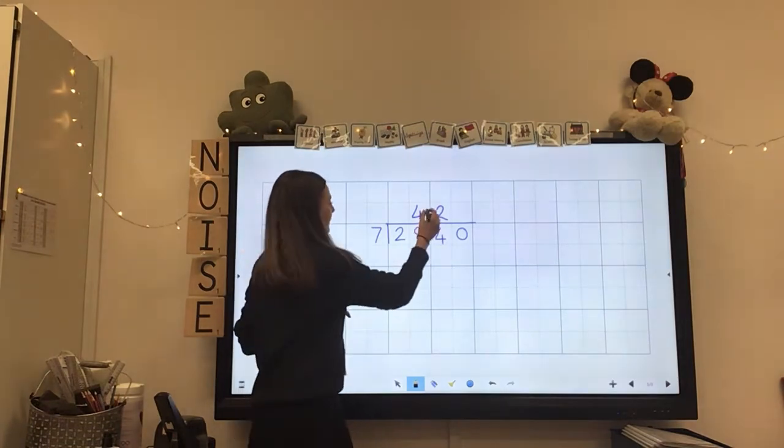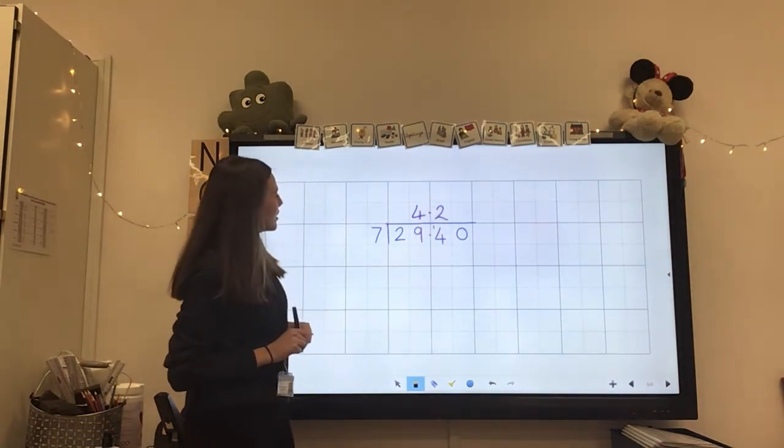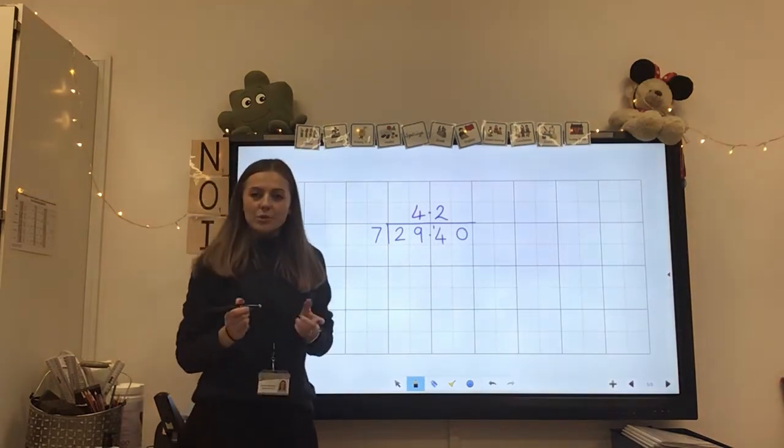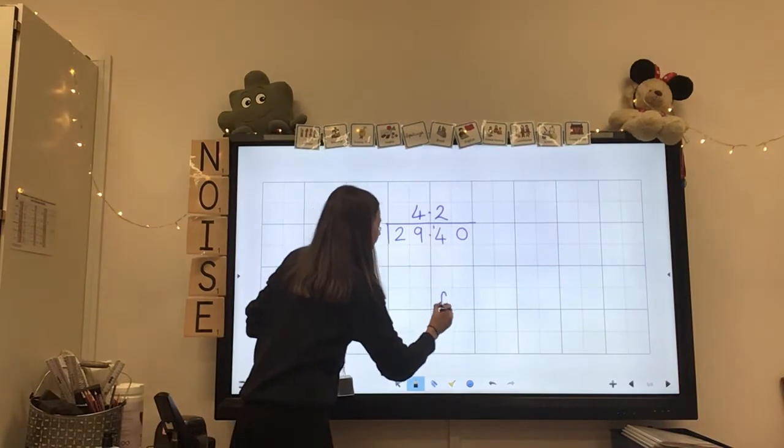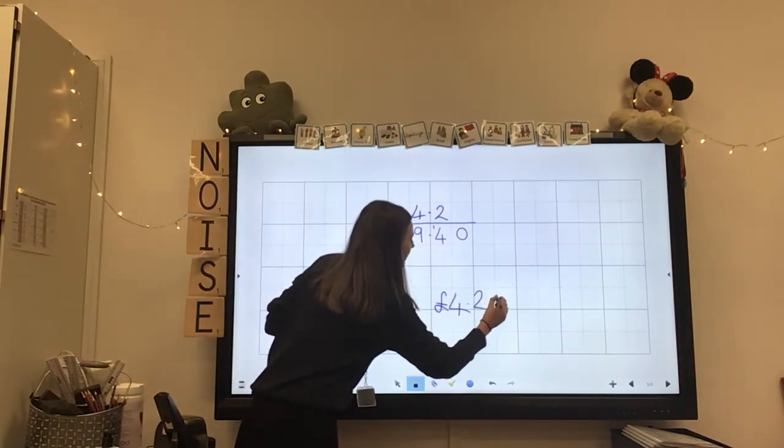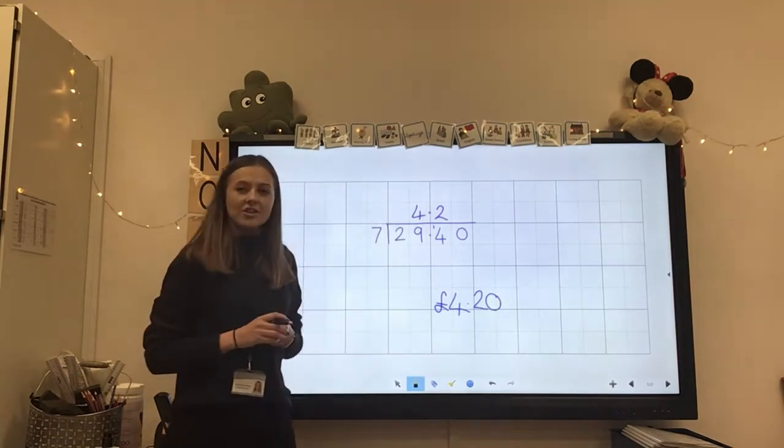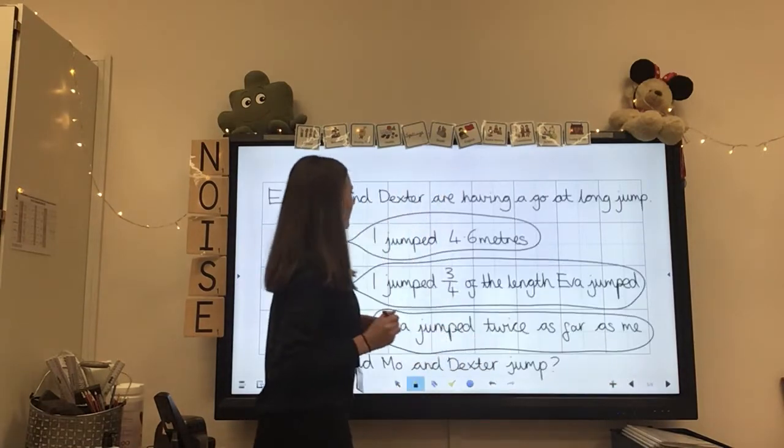Remember your decimal point. There we go. Okay, so 4.2 is our answer, but we're talking about money, aren't we? So actually, our answer is Ron receives £4.20 each time he washes the car. Excellent. Okay, let's have a look at another one.